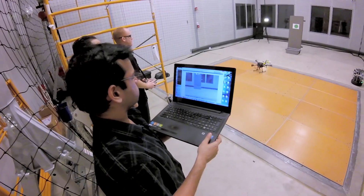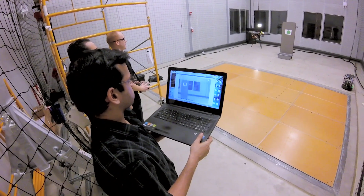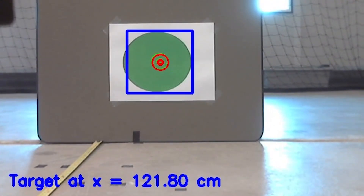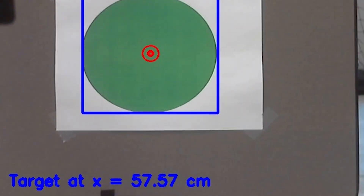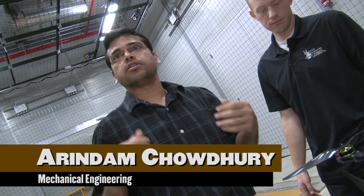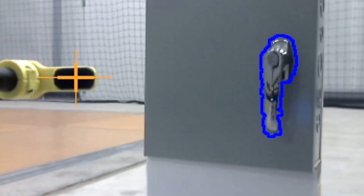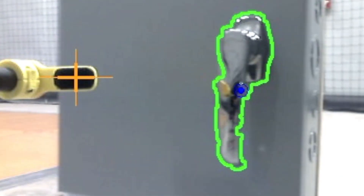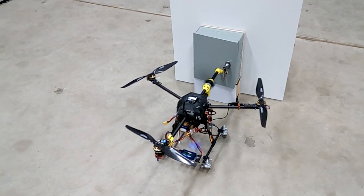We have a webcam on the front where we can actually identify different objects. This boom copter has been trained to identify objects, so whenever such an object comes in front of the camera, it knows what it's supposed to do. We are pre-programming it to grab the door handle and open it up when it sees a door and a handle like that.